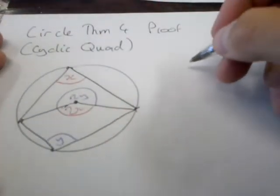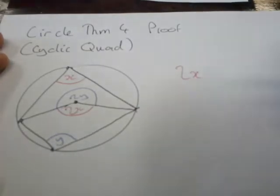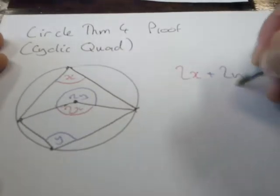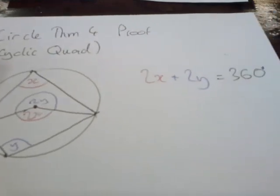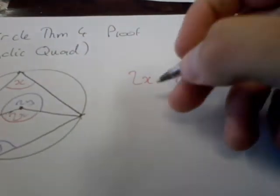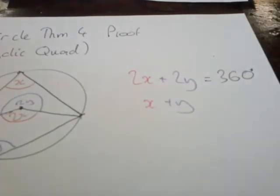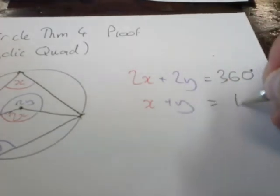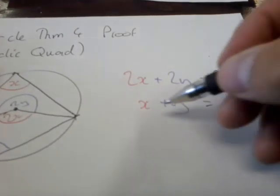so we can discover that 2x plus 2y is definitely equal to 360 degrees, one full turn. And then we just take that equation, we just divide it by 2, and discover that x plus y is equal to 180 degrees. That's it, we're done. Hooray, we win.